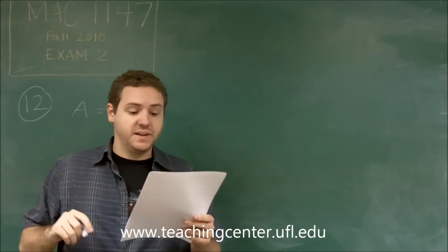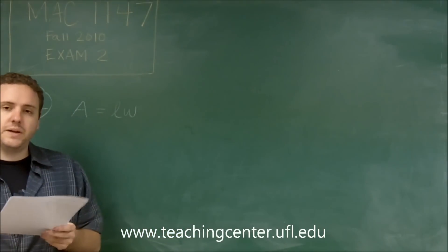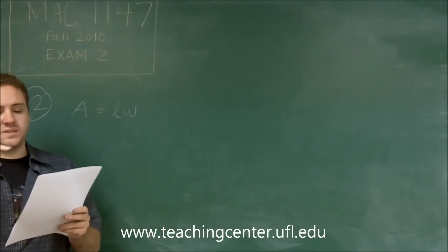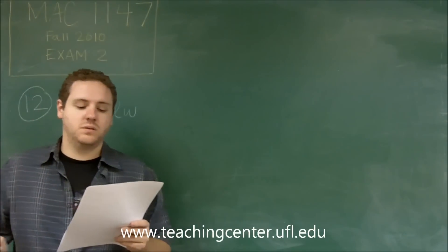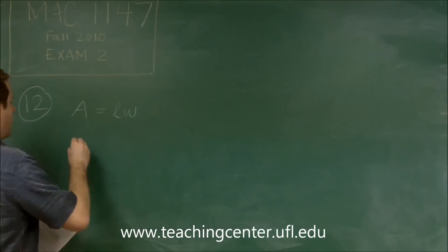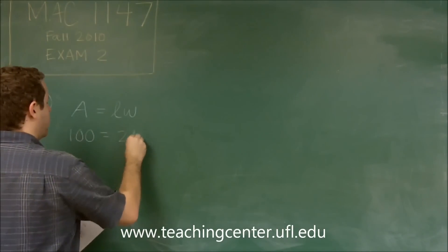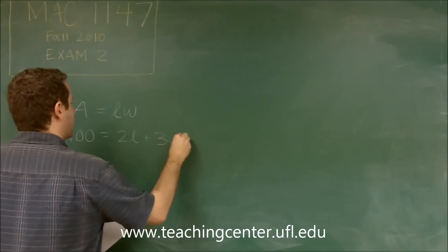And we have 100 feet of fencing. Now, feet of fencing means the perimeter of all of that. Well, if you look at the picture, there's two L's and three W's on that because there's a one in the middle. So our 100 feet of fencing has to be 2L plus 3W.